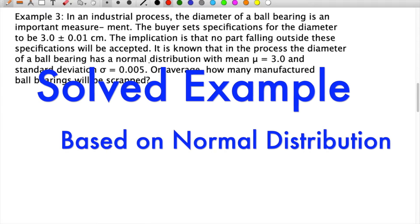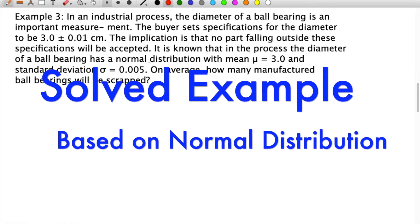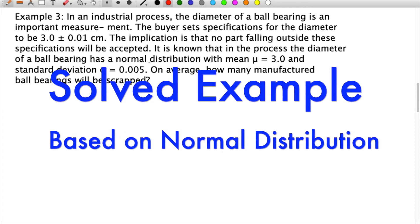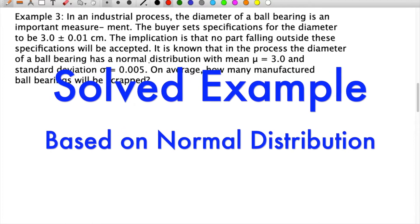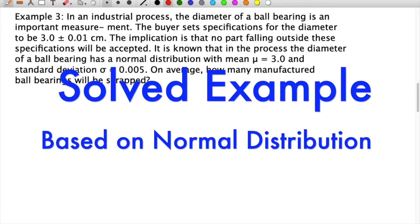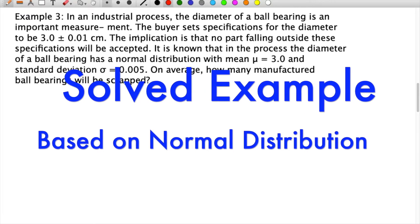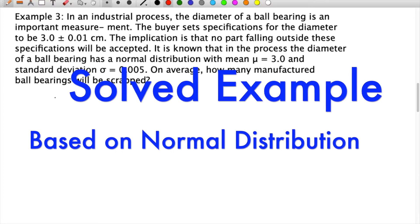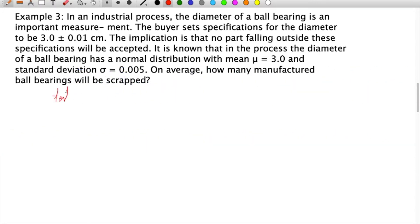In an industrial process, the diameter of a ball bearing is an important measurement. The buyer sets specifications for the diameter to be 3.0 plus or minus 0.01 cm. These are our tolerance limits.